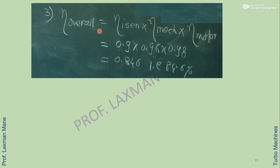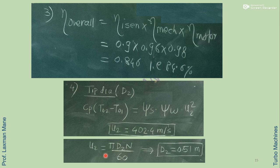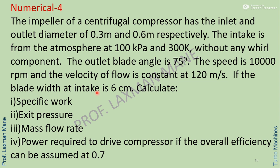Overall efficiency is the product of isentropic efficiency, mechanical efficiency, and motor efficiency. Putting in all efficiency values, we find overall efficiency as a percentage. To calculate tip diameter D2, we first find U2 using the formula Cp into (T02 minus T01) equals slip factor into work input factor into U2 square. Solving for U2 and then using U2 equals pi D2 N by 60, we find impeller exit diameter D2.